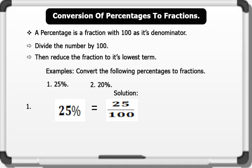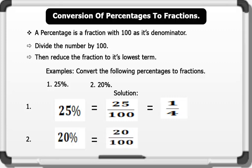To reduce to the lowest term, we divide through by 25, which gives us 1 over 4. For 20%: dividing the number by 100 equals 20 over 100; to reduce to the lowest term, we divide through by 20, which gives us 1 over 5. That's brilliant.